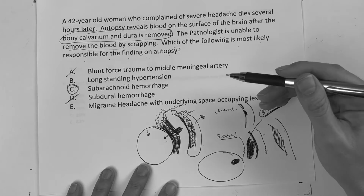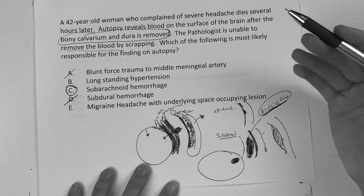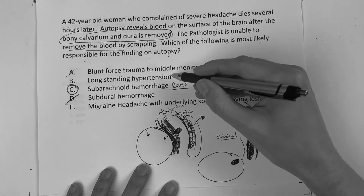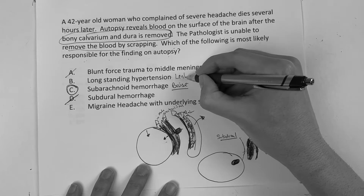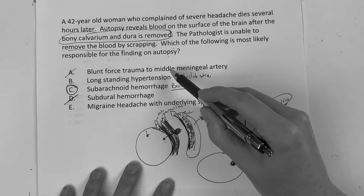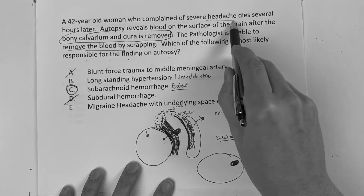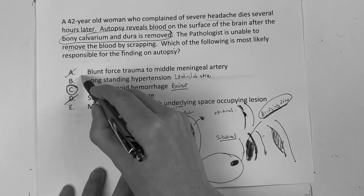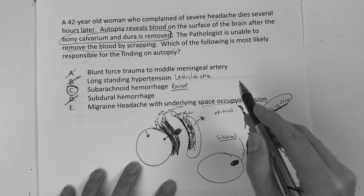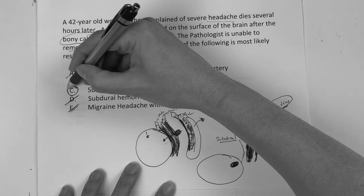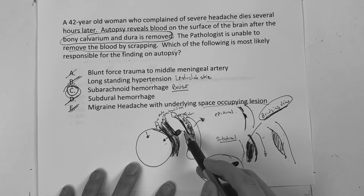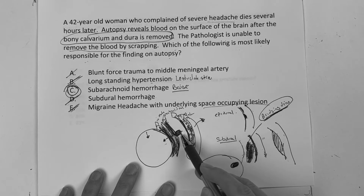That leads to subarachnoid hemorrhage — a ruptured aneurysm. With long-standing hypertension, I think of lenticulostriate arteries, and this happens suddenly with a severe headache, so I'm not thinking longstanding anything. Migraine with space-occupying lesion — nothing indicates that. The best answer is subarachnoid hemorrhage. They're testing whether you know dura, arachnoid, pia, and the distinction between epidural, subdural, and subarachnoid. Answer choice C.